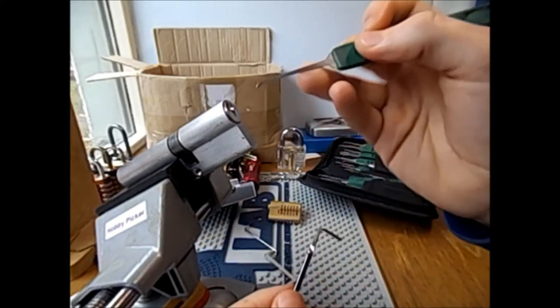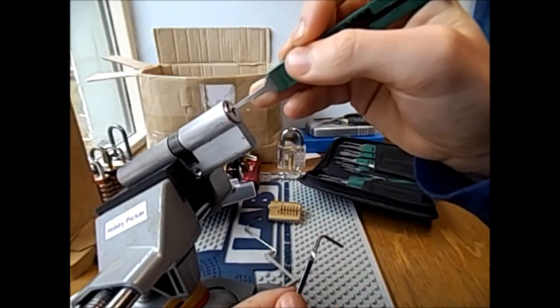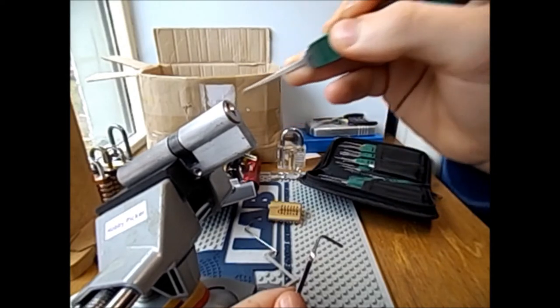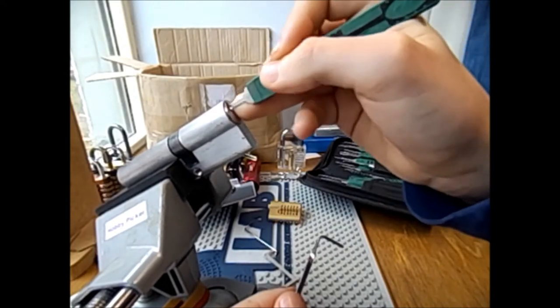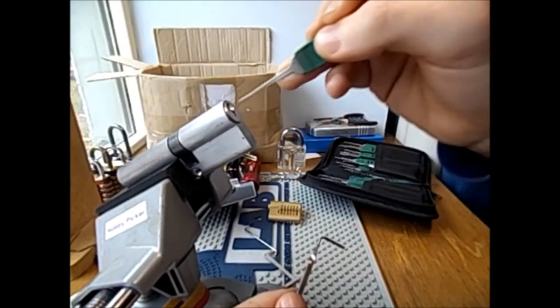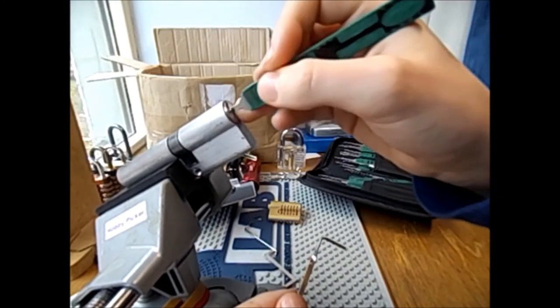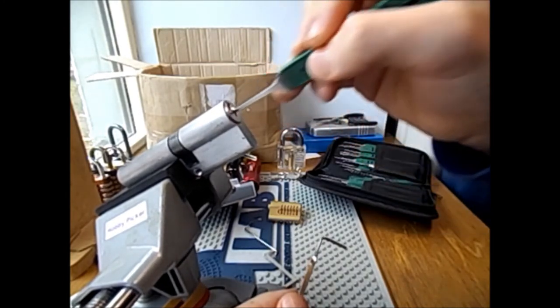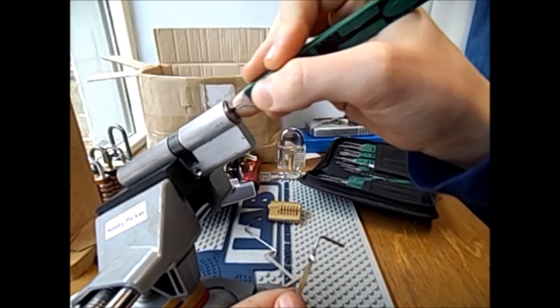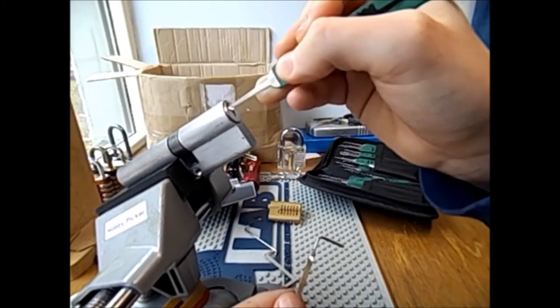Before we put our tension wrench in, I'm just going to put my pick to the back of the lock, and pull it out, and I'm going to do that a few times, and I can feel that there's absolutely no binding at all when I pull my pick out of the lock. It pulls right out, nice and freely. I also have to angle my pick around the warding, so make sure you're doing that.